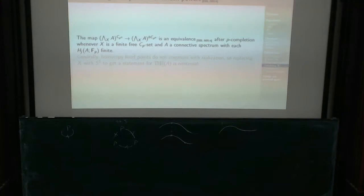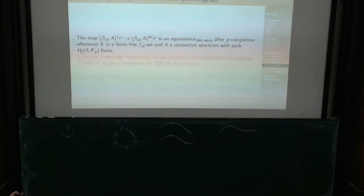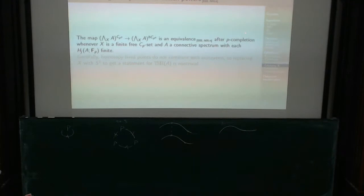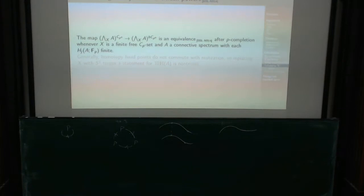That brings me to another point. If X is a finite free CP^N set, and I take the smash power of A that number of times, and I look at the difference between the fixed points and the homotopy fixed points, Böckstedt, Bruner, Lunøe-Nielsen, and Rognes showed in 2014 that after P-completion, this is actually an equivalence. And that also uses Suslin's result. They prove it for N equal to 1 — this is a sort of Segal conjecture, but only for finite.